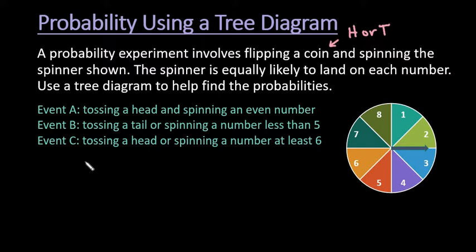What we're going to do is start by drawing out our tree diagram of what's possible. On our coin we can get heads or we can get tails, so this is our options for our coin.